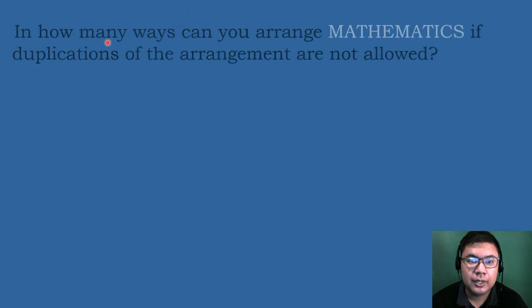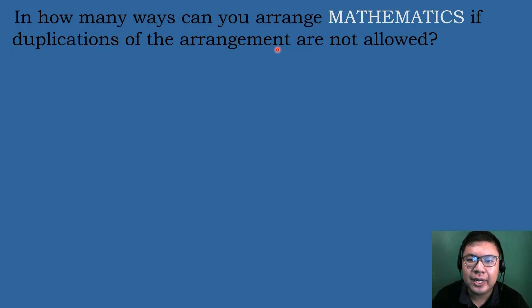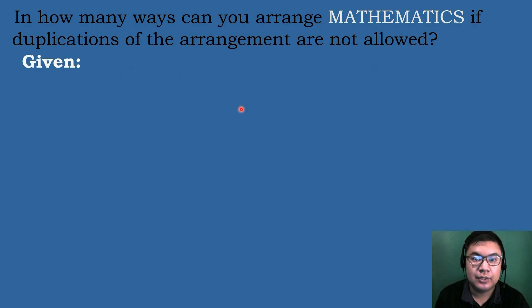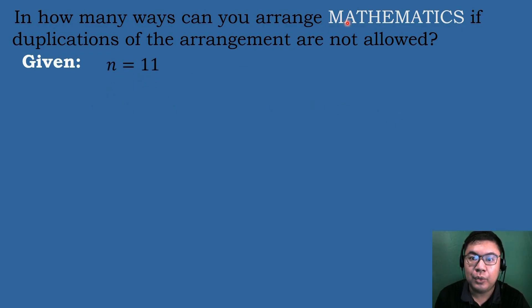Let's have our first example: In how many ways can you arrange the word 'mathematics' if duplications of the arrangement are not allowed? This is an example of distinguishable permutation. Our first step is to identify the given. The number of objects N is equal to 11 — we count all the letters: 1, 2, 3, 4, 5, 6, 7, 8, 9, 10, 11.